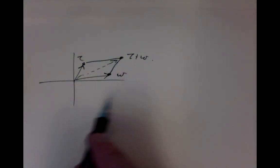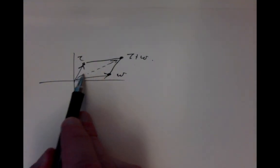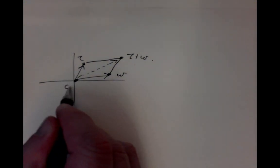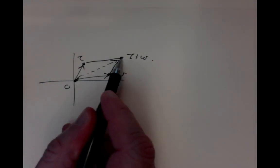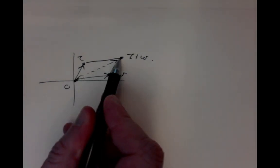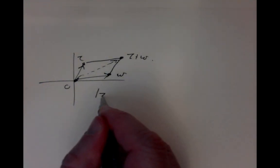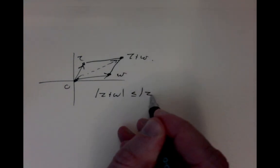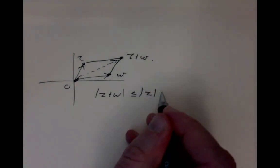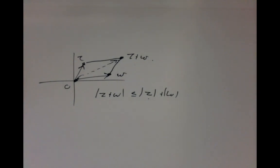One also gets from this the so-called triangle inequality: this vector is in length never longer going straight between two points — between the origin and this point here — than going somewhere in the middle. So if you go straight from here to Dublin, it's certainly not longer than going first to Cove and then to Dublin. That gives us the triangle inequality geometrically, which is a bit harder to get algebraically.